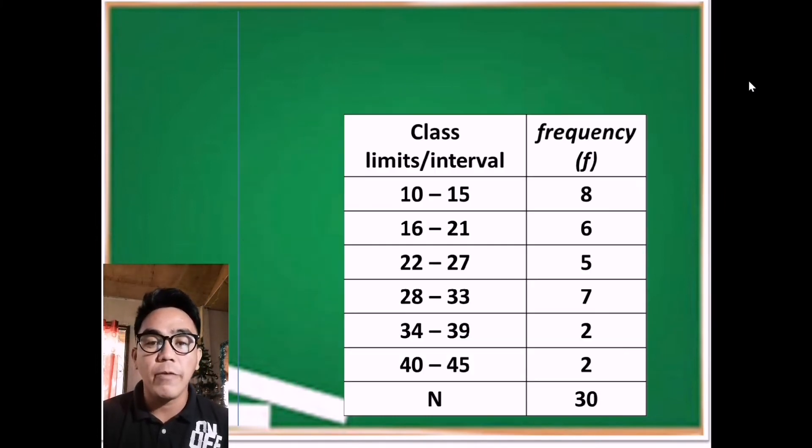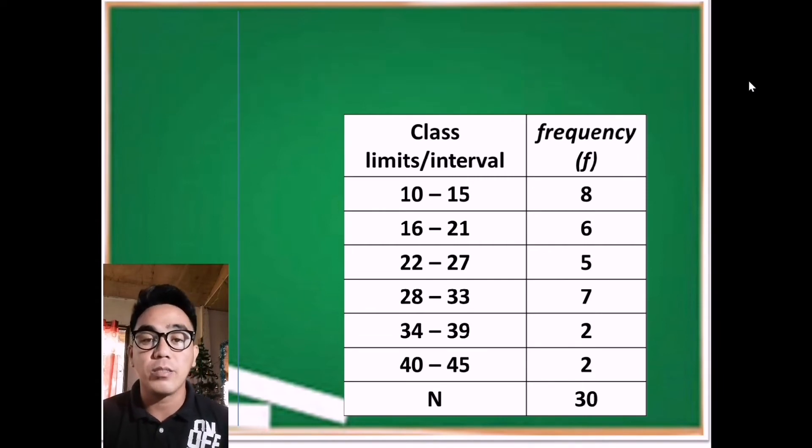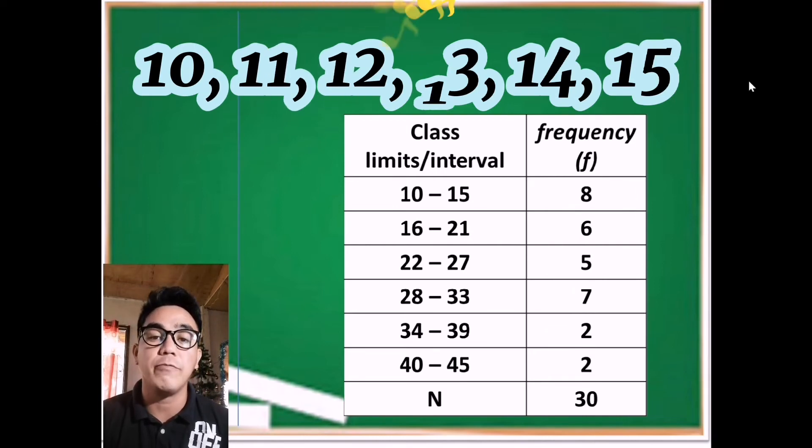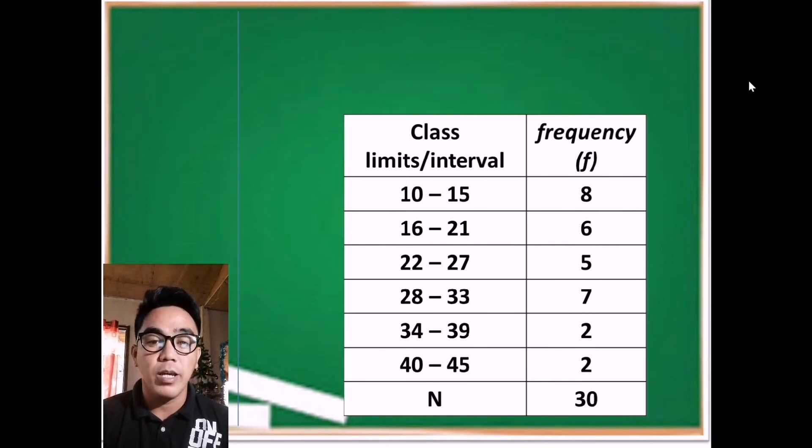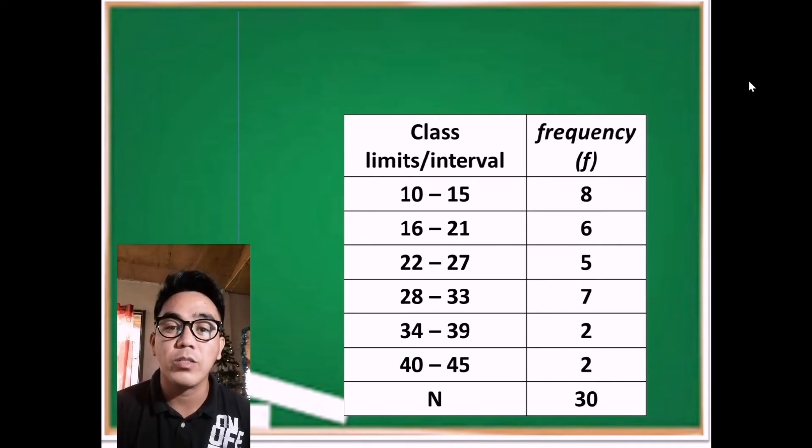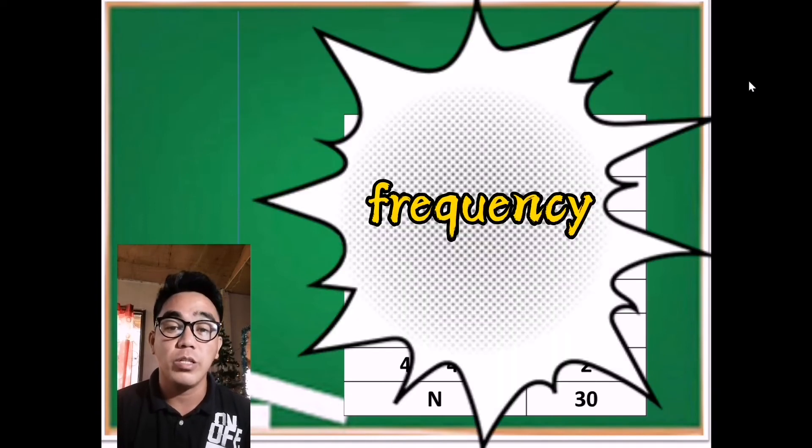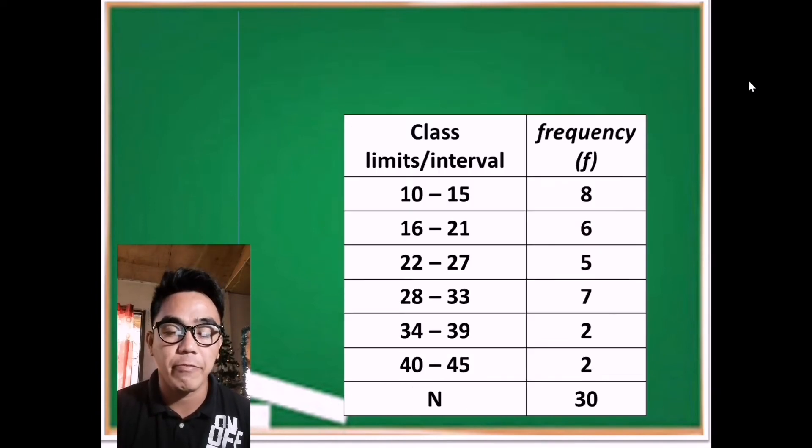Now if we're going to count individually from lower limit to upper limit as 10, 11, 12, 13, 14, 15, then we are talking about the class size. Now when we talk about the number of raw scores that fall within that range or class interval, then we are talking about the frequency, denoted as letter f.